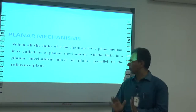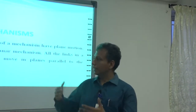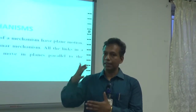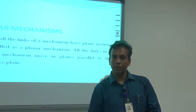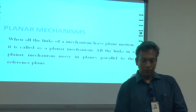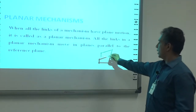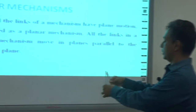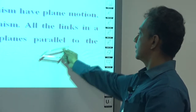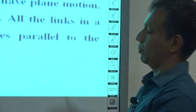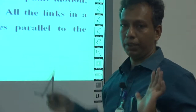What are planar mechanisms? When all links are connected in a single plane and all the links are parallel to a particular plane, that mechanism is termed as a planar mechanism. For instance, when I have four links — 1, 2, 3, 4 — all four links are parallel to the vertical plane. So this mechanism, when I hold one of the links, is called a planar mechanism.